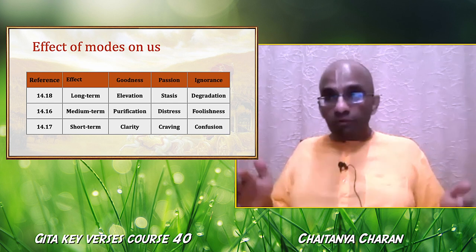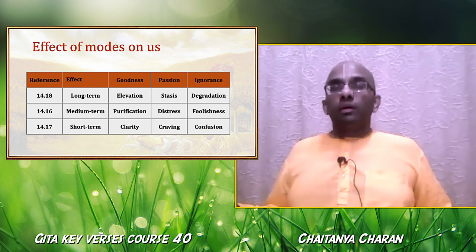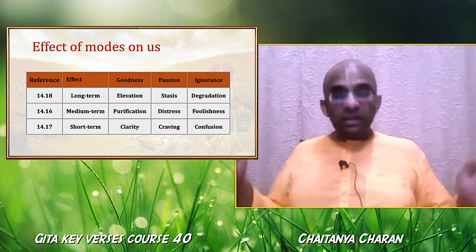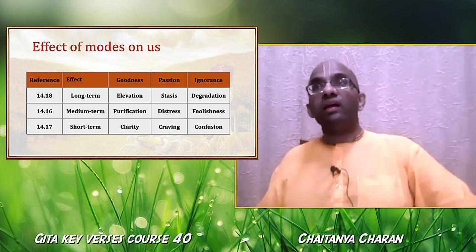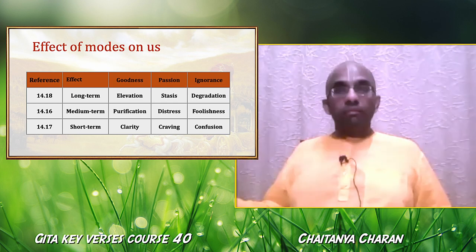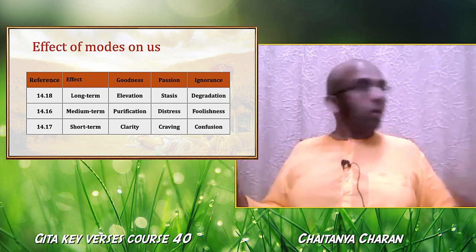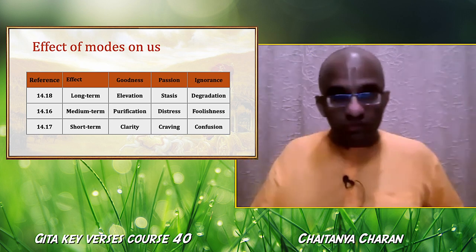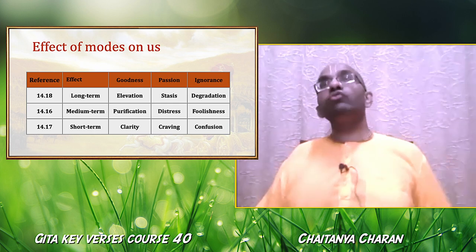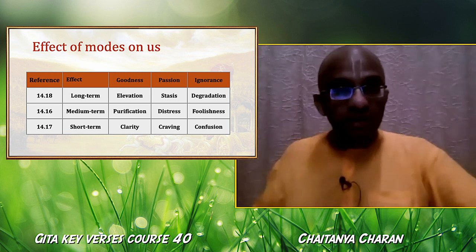In the short term: if we function in the mode of goodness, clarity comes — take a few deep breaths, stop running around, and we start perceiving things more clearly. In the mode of passion the short-term result is craving: I have to do this, I have to get this, I want to enjoy this — craving increases. In the mode of ignorance the short-term result is confusion: what should I do? There are so many things, which one should I do? Maybe I can't do anything.